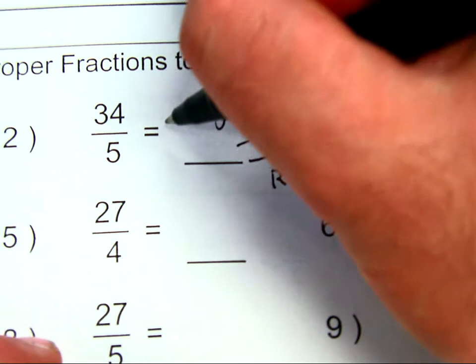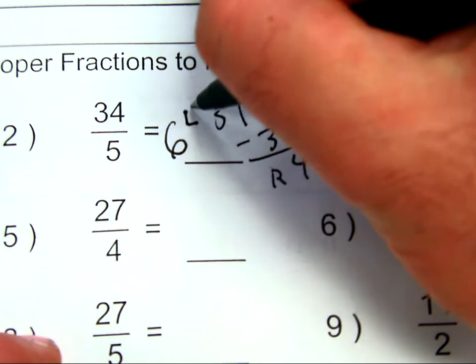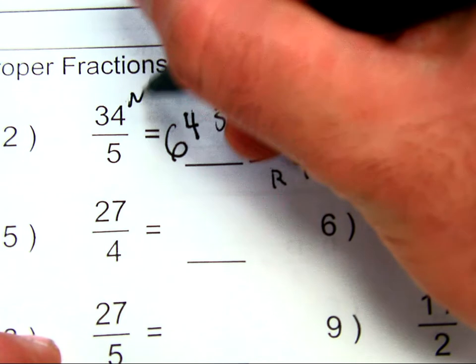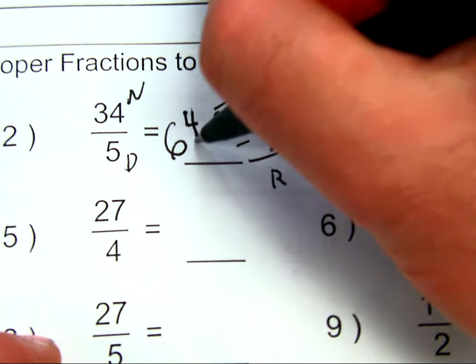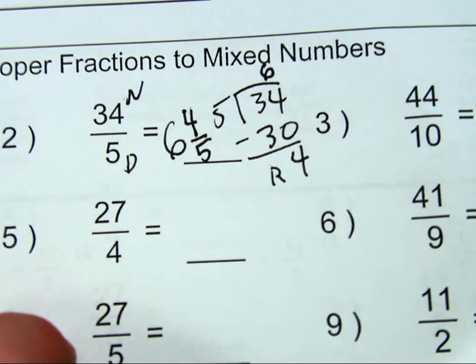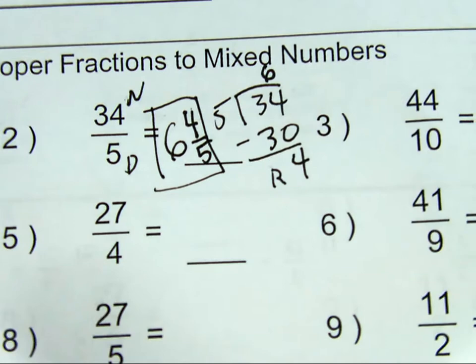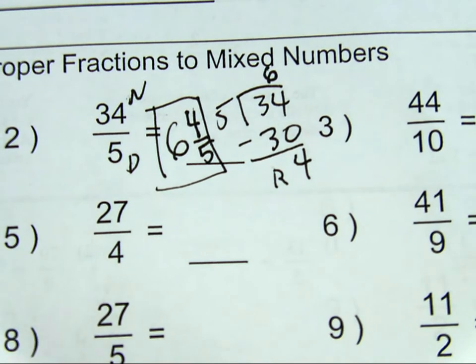So, my big number, 6, goes right there. My remainder of 4 becomes my numerator. That's my top number. My denominator is going to stay exactly the same. So, it's going to be 6 and 4 fifths. I'll box it off to make sure I know exactly where my answer is. That's how you convert improper to mixed.